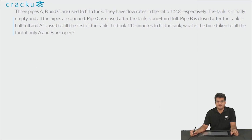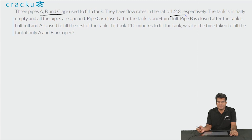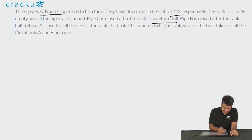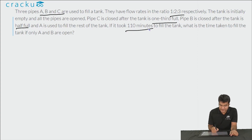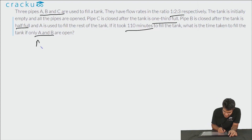In this question, there is a tank with 3 pipes A, B and C. The flow rates of A, B and C are in the ratio 1:2:3. Initially the tank is empty and all 3 pipes are opened. Pipe C is shut off after the tank is one-third full. Pipe B is shut off after the tank is half full. So for the last half tank only pipe A fills it. This process took a total of 110 minutes. We need to find the time taken if only A and B are used.